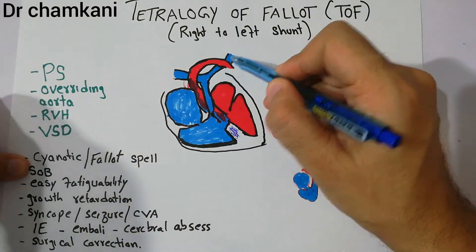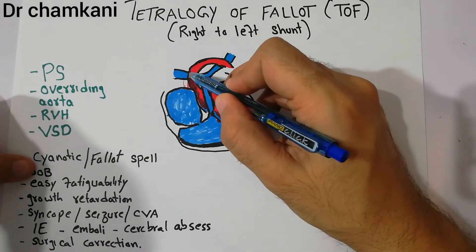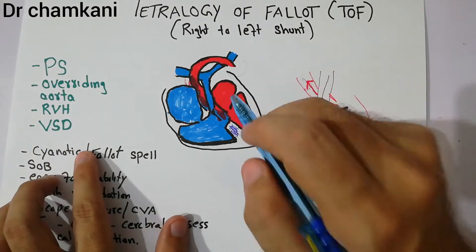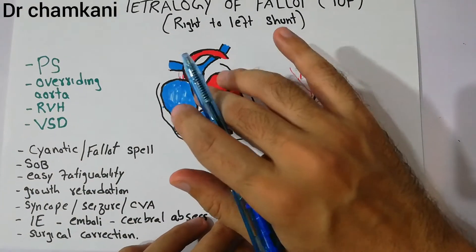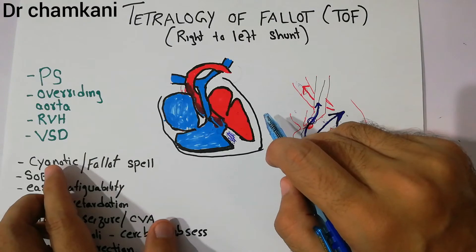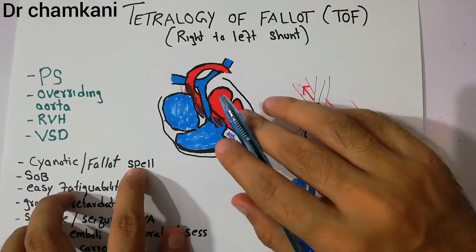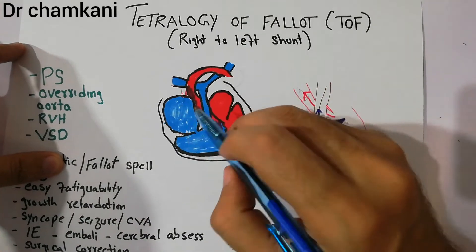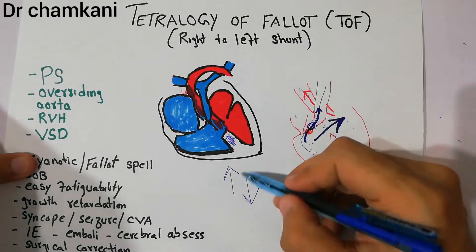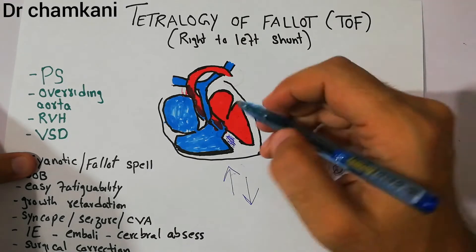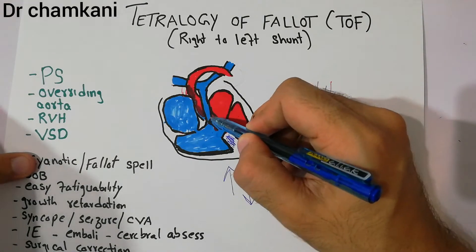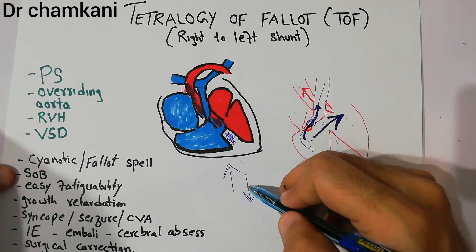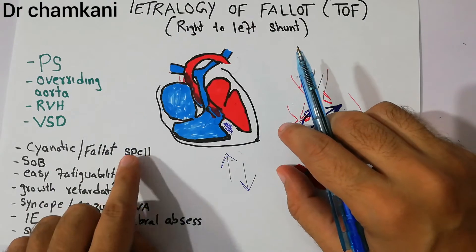Blood is not going adequately into the lungs — only a very small amount reaches the lungs for oxygenation. This causes cyanosis, which worsens when the patient exercises. These cyanosis spells are known as cyanotic spells or Fallot spells. During exercise, pressure in the lungs increases and pressure in the aorta decreases, making it even more difficult for blood to reach the lungs, further decreasing oxygenation.